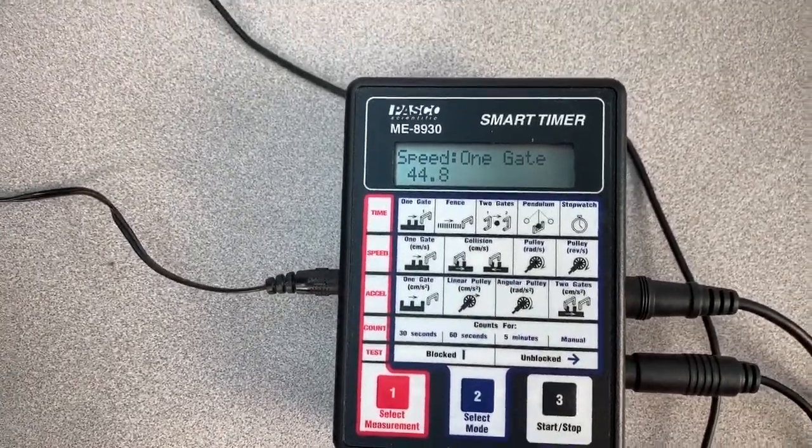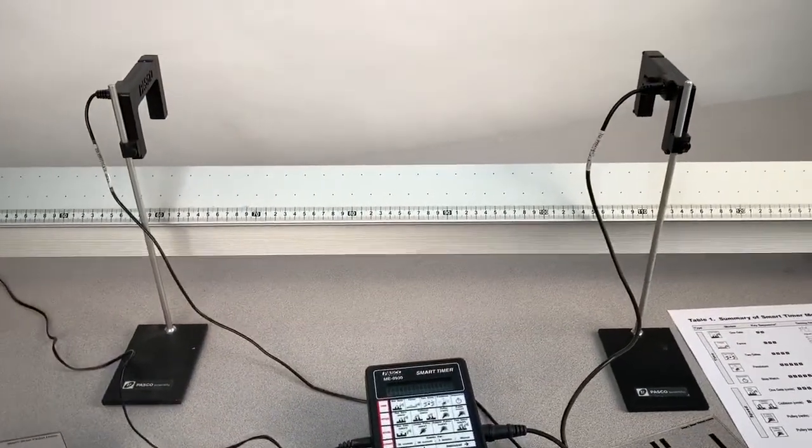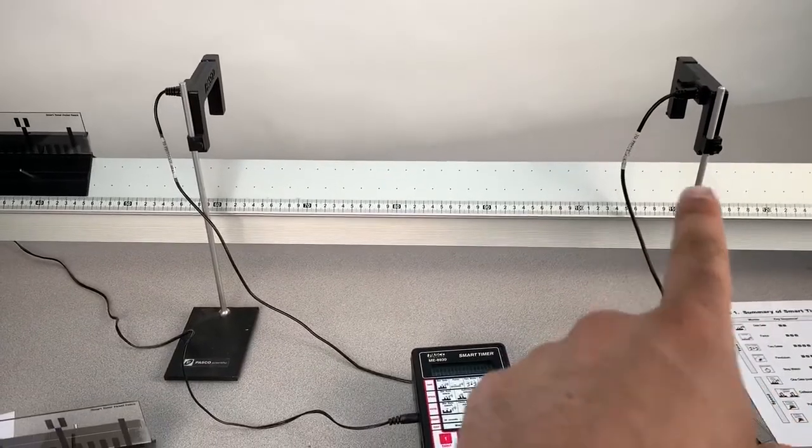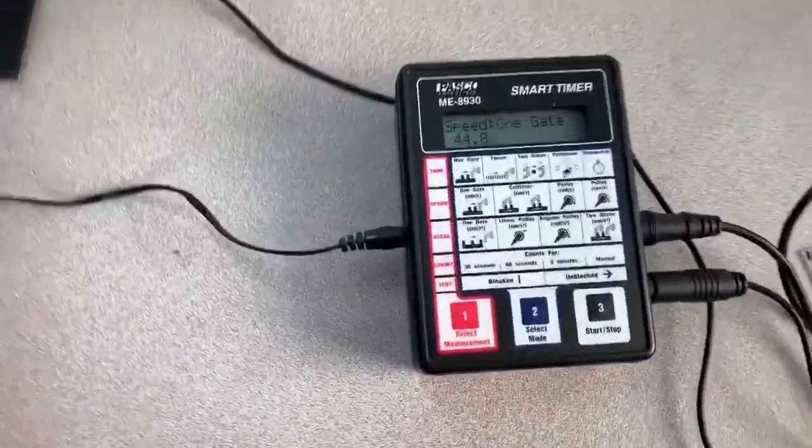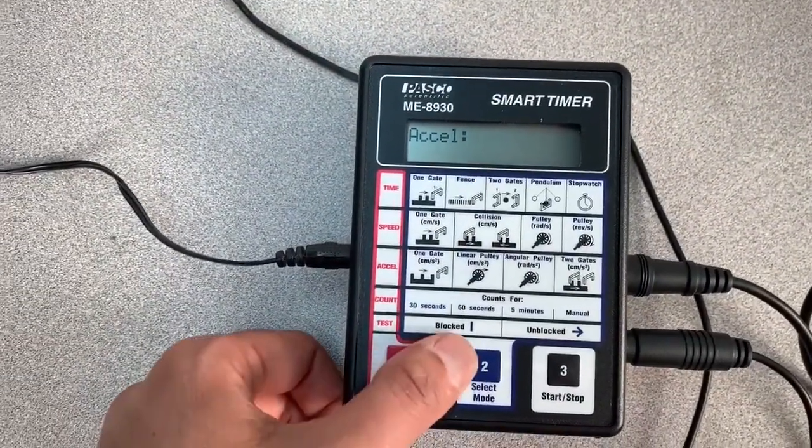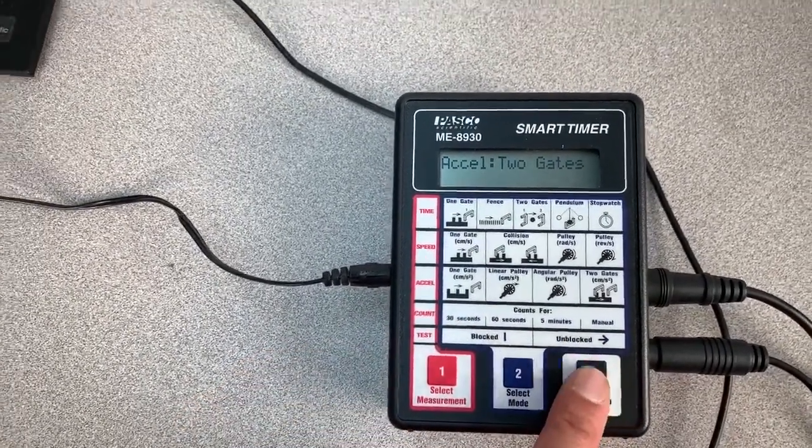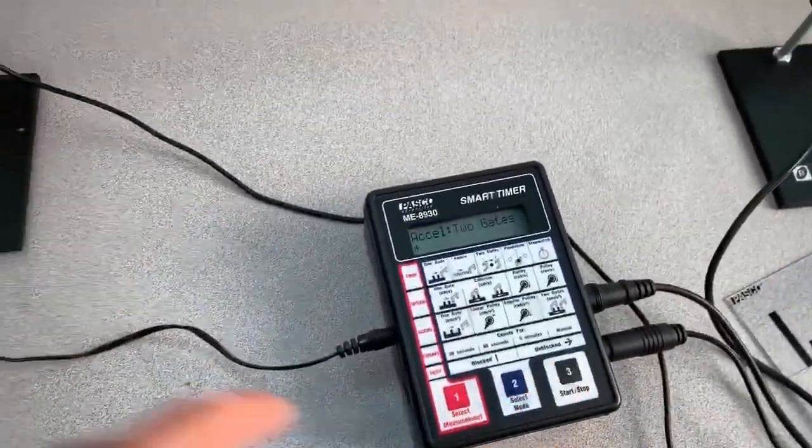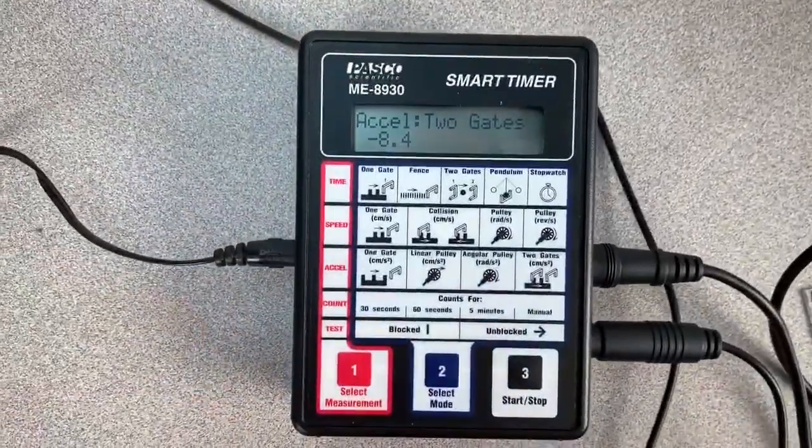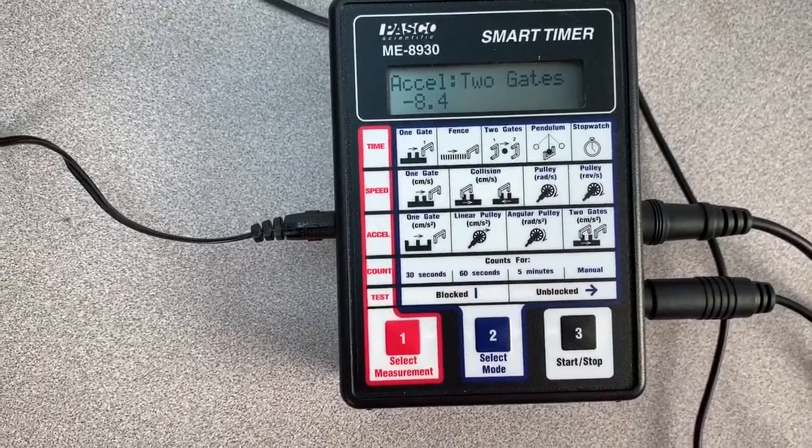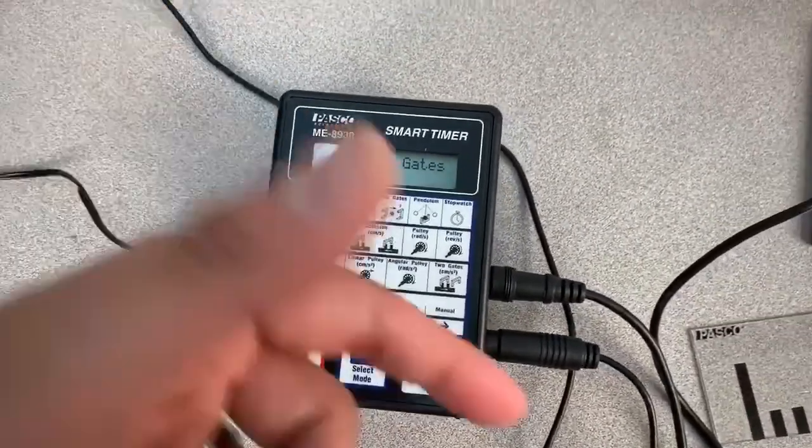I can also get the acceleration. In order to do acceleration I'll need to be using both photogates. It's going to get the velocity here and the velocity here and it keeps track of the time between the two gates to get the acceleration. So I'll change the measurement mode to acceleration with two gates. I press the start stop button and you have a negative 8.4 centimeters per second squared acceleration which is a good indication because it is slowing down after I pushed it.